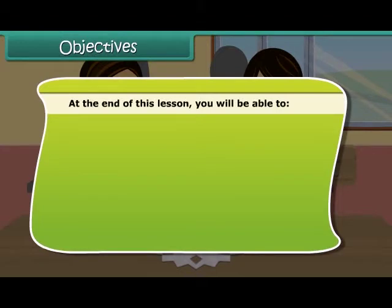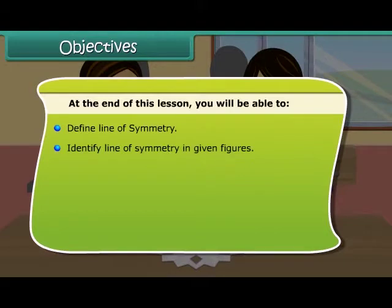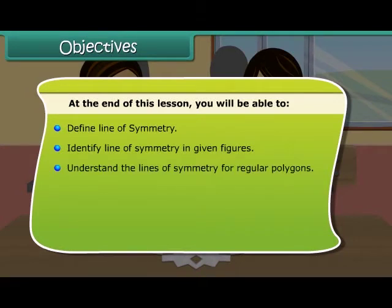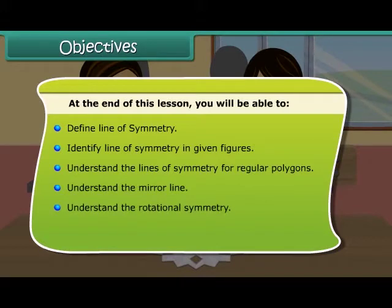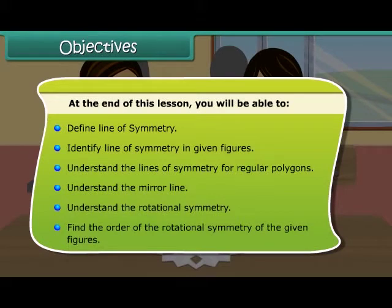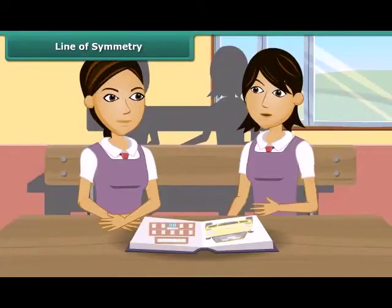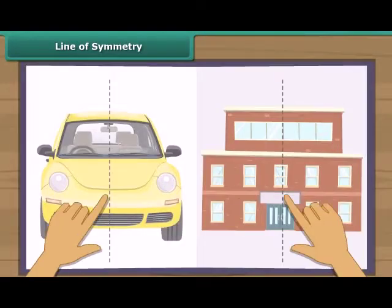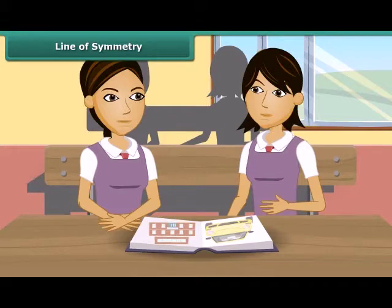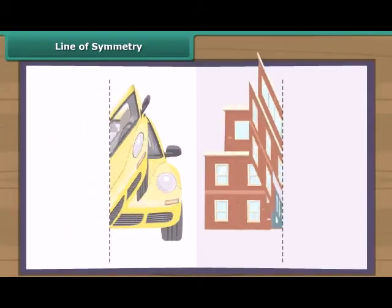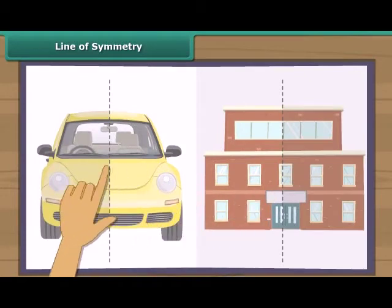Look at these figures. The line you can see is the line of symmetry of these figures. Line of symmetry — what is that? When we fold the figure about this line of symmetry, we will see that the two parts of the figure are coinciding.